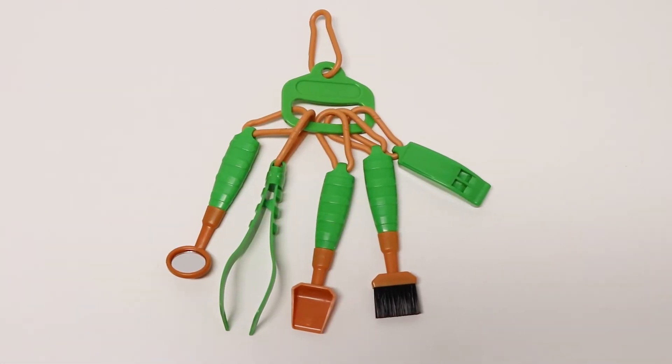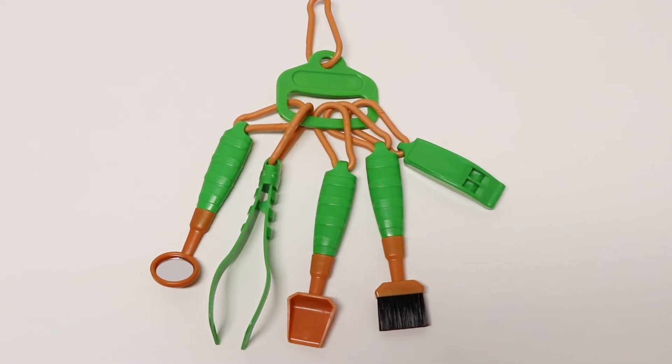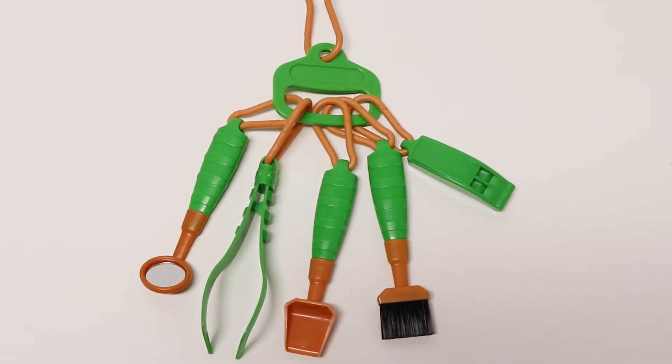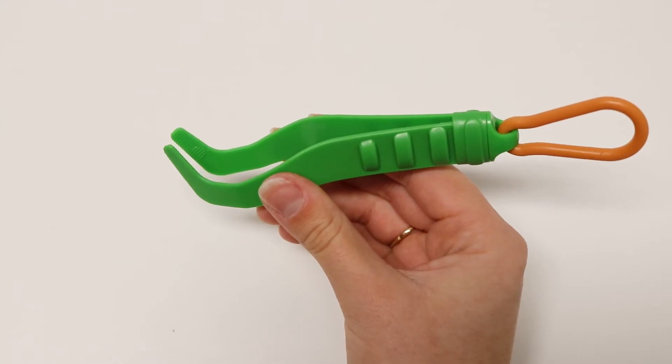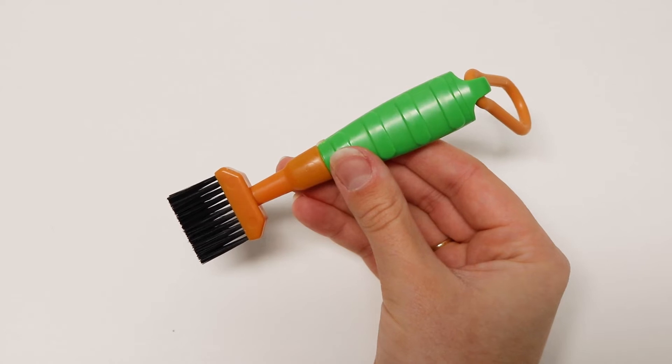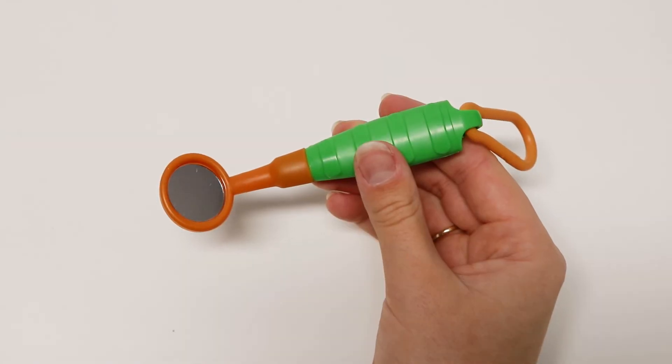Expand your scientific exploration and make your own discoveries with the five-in-one backyard explorer set. It includes a whistle, tweezers, a shovel, brush and an angling mirror.